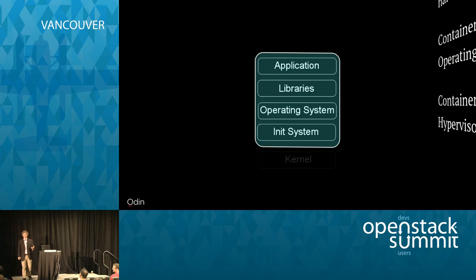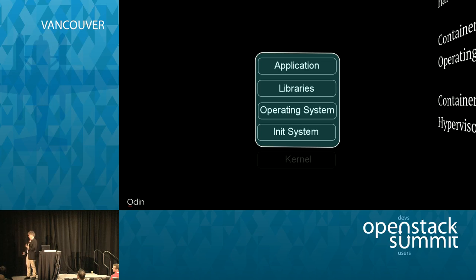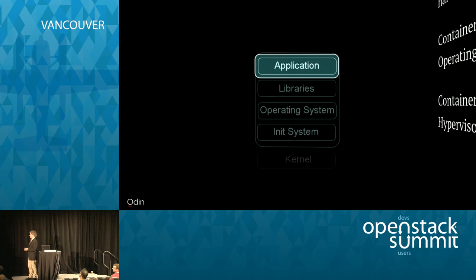Hypervisors like Xen have to pull a huge amount of tricks to share memory between guests — they have this whole KSM subsystem. With containers, it's simple because the page cache is actually shared between multiple guests. With the container model, we get far more sharing of resources naturally than with the hypervisor model. This naturally makes containers far more dense than hypervisors, and also because there's a lot less cruft in the image itself.